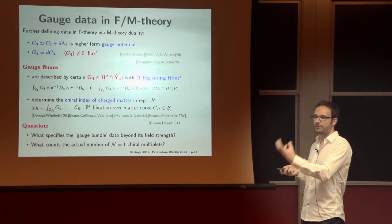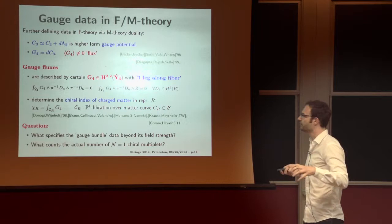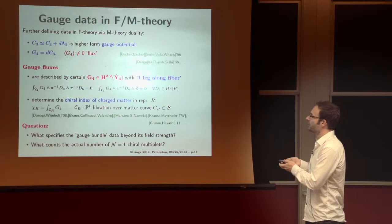They are transversal, one-legged in the fiber. And the good thing about them is that they determine the chiral index of charged matter. And one can argue by duality with heterotic, with type IIB, or with M-theory, that the natural pairing between the four-form flux and the matter surface, so a P1 fiber over matter curve, indeed gives rise to the chiral index.